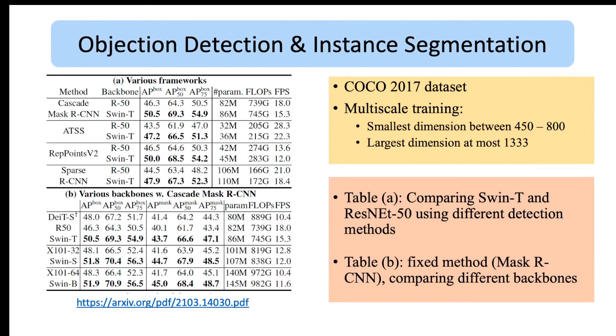The next experiment is object detection for which they use COCO 2017 dataset. Table A compares the performance of Swin Transformer with ResNet-50 using different detection frameworks. And as you can see, Swin Transformer shows performance gains using all detection methods.